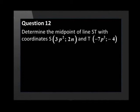Determine the midpoint of line ST if the coordinates of S are (3P squared, 2N) and the coordinates for T are (-7P squared, -4).